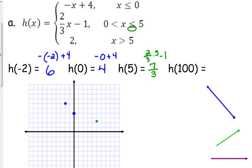When x is greater than 5 — say h of 100 — what's the y value? It's 2. I picked that on purpose. I know we can't graph 100, but I exaggerated that point to prove that it doesn't matter what x is: if x is greater than 5, the y value is always 2.